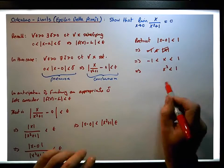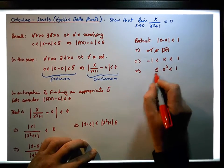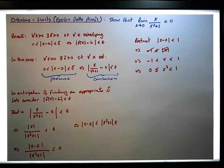If I square zero, I get zero. So actually, this ends up as x squared is going to be greater than or equal to zero.